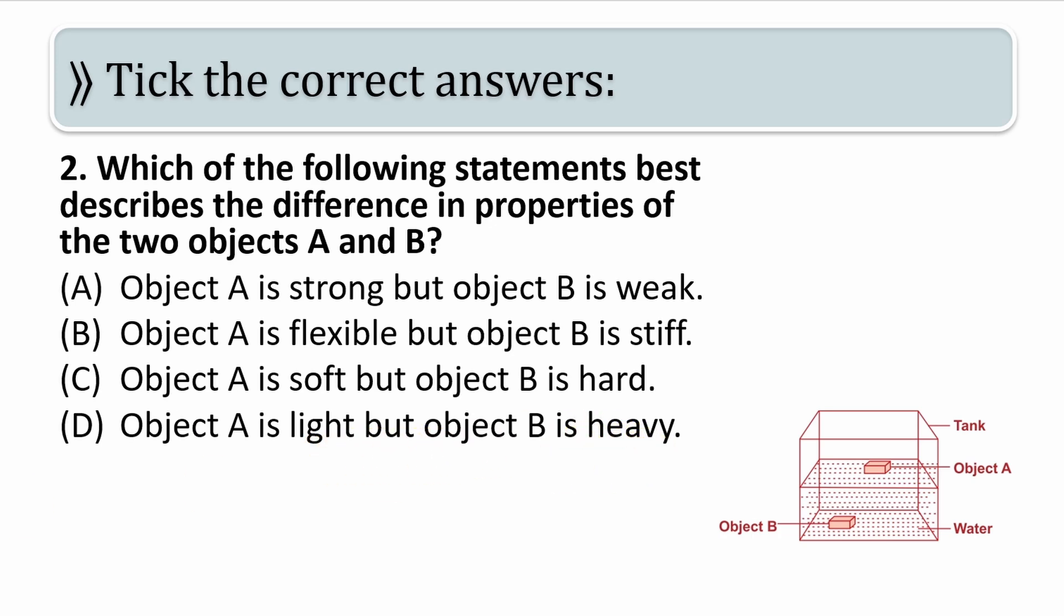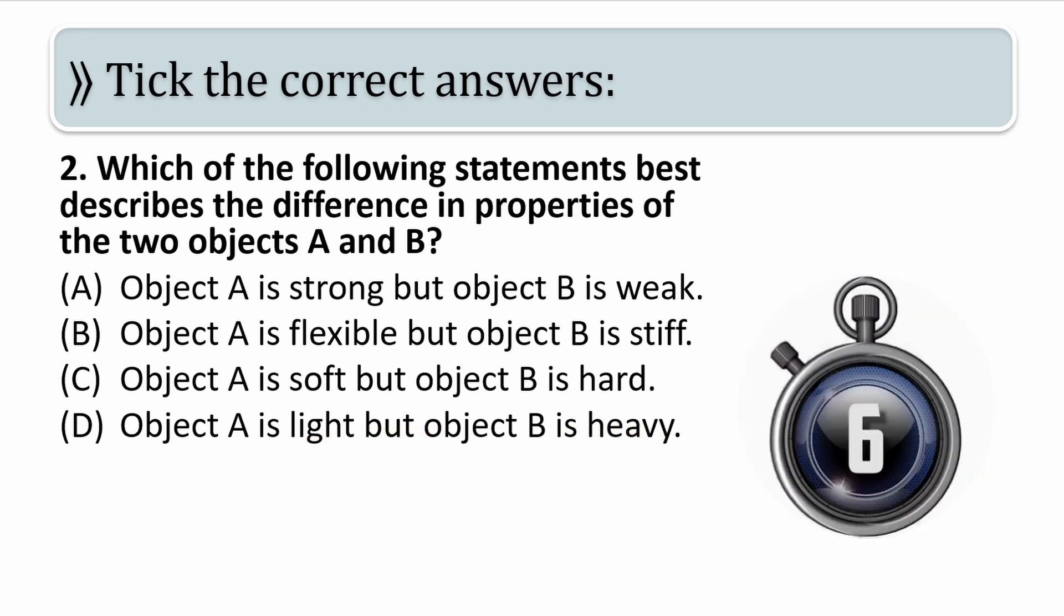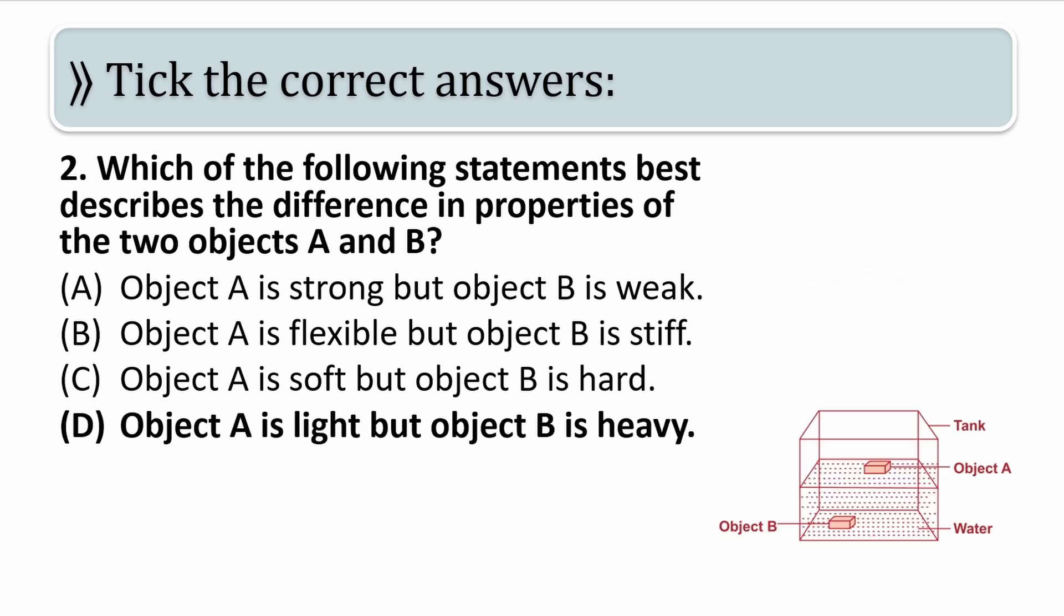Your time starts now. Time up students. The answer is D, object A is light but object B is heavy. Now remember that object B is heavy and that's why it is at the bottom of the liquid, and object A is light and that's why it is floating in the water.